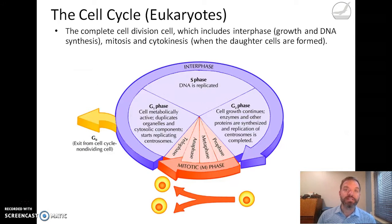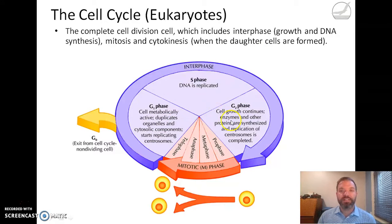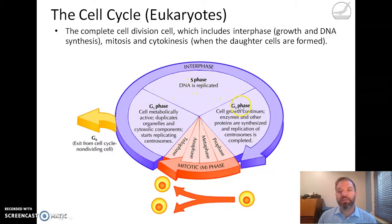For eukaryotes they have to go through a cell cycle. This includes interphase, which has two phases of growth — G1 and G2 — and the S phase (DNA synthesis) where the DNA is replicated. So the sequence is: grow, double your DNA, grow some more, and then the cell is ready to enter mitosis.